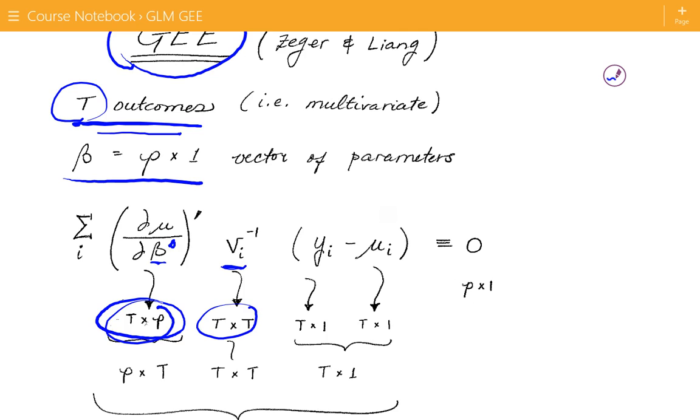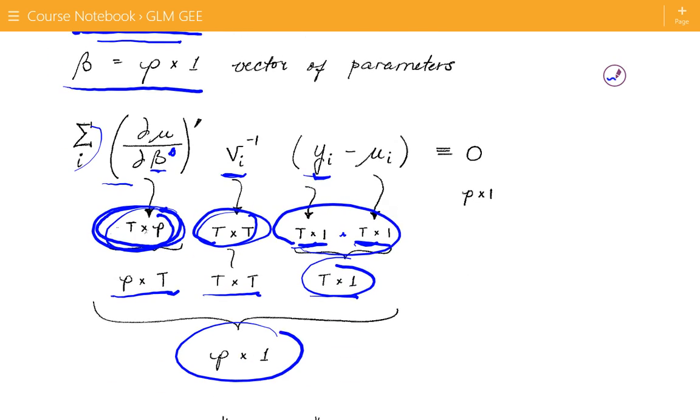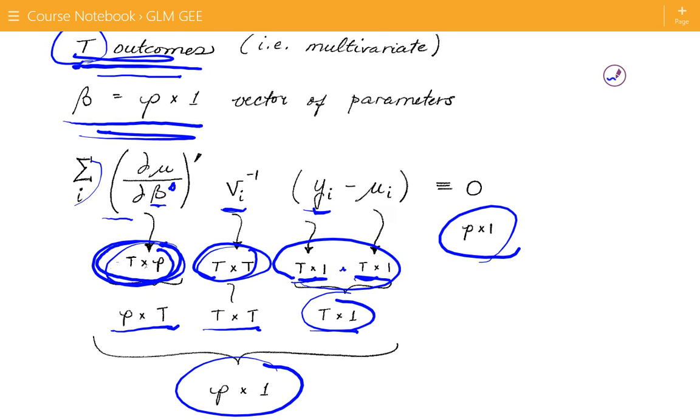The variance matrix and its inverse is a T by T, right? So the variance covariance is essentially associated with the T outcomes. Yi is a T by one. Mu i is a T by one. And here we're all talking within the summation, so it's all about any given observation. So if we take the transpose of this T by P and multiply it by a T by T, and we multiply, take the differences of this, we've got a T by one, a P by T times a T by one times a T by one, and it gives you a P by one, which is the outcome, as would be expected, because we are estimating a P by one vector of parameters.